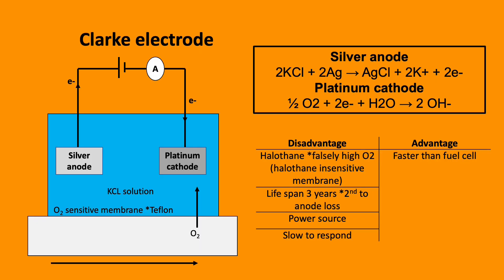The Clark electrode has four components: a platinum cathode, a silver anode, an electrolyte solution typically containing potassium chloride, and an O2-sensitive membrane containing Teflon.